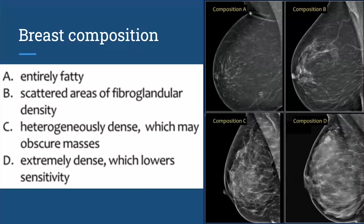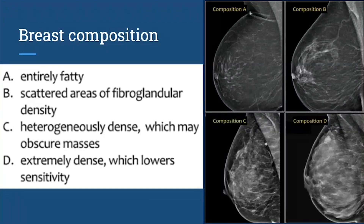All breasts are composed of fatty breast tissue, which is the darker gray color, and dense fibroglandular tissue, which shows up white on the mammogram. The more dense fibroglandular tissue you have, the more you are considered dense. The last two categories — heterogeneously dense and extremely dense — are the categories considered dense. This is fatty breasts, and this is a scattered breast.